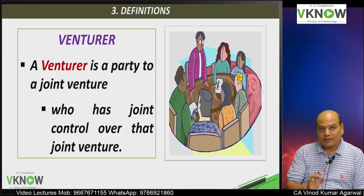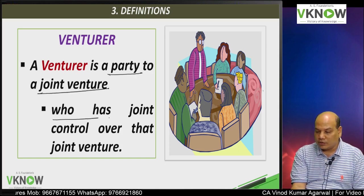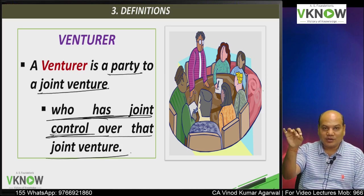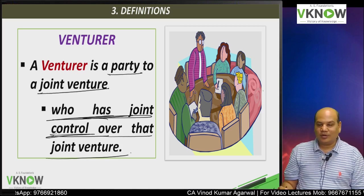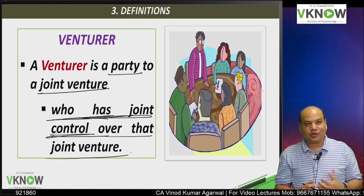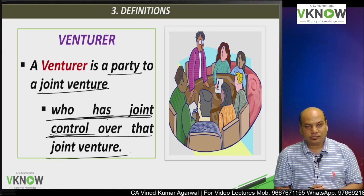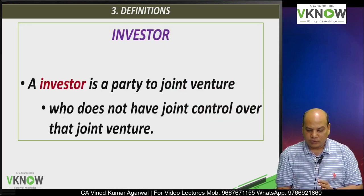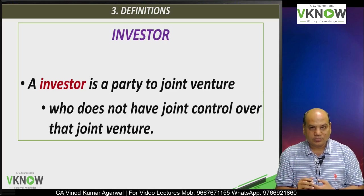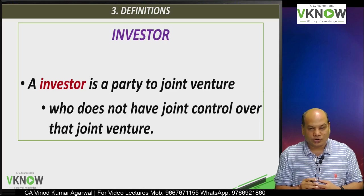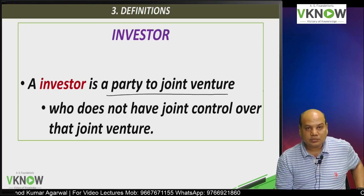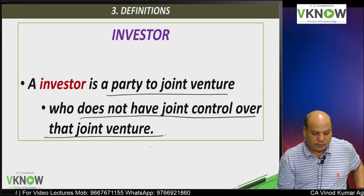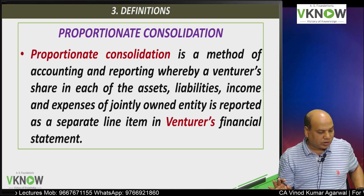A venturer is a party to a joint venture who has joint control over that joint venture. That means his consent is also required — he must approve the decision; he is a party to the decision making process. Decisions cannot be taken without his approval. Such parties are called venturers. Then there are investors who only put their money and don't participate in day-to-day operations or the decision making process. An investor is also a party to the joint venture but does not have joint control over it.